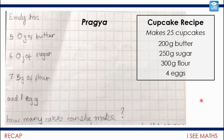I've got a slight twist on this question. You might be able to work out how many cakes she can make, but I also wondered if you could figure out which ingredient is the one that's limiting how many cupcakes she can make the most — which ingredient will Emily run out of first. Pause the video and have a go at that.